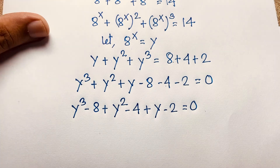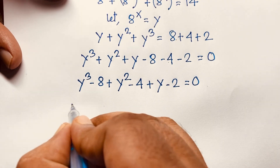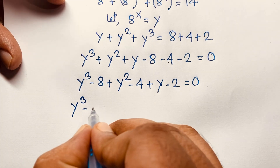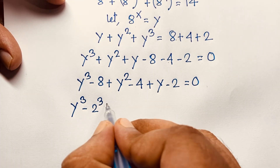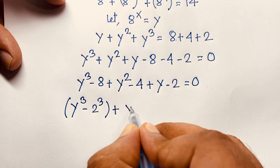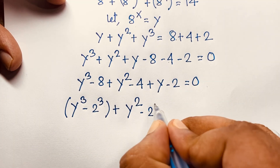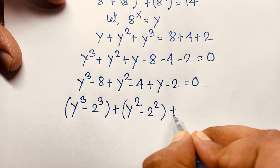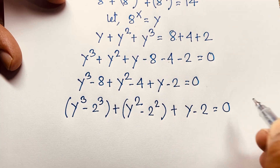We rewrite 8 as 2³ and 4 as 2², giving us: (y³ - 2³) + (y² - 2²) + (y - 2) = 0.